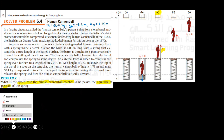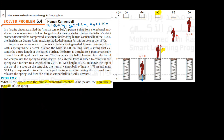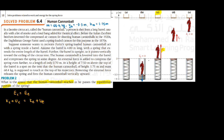We are going to use the law of conservation of energy again. This time I am going to choose points C and E, because C is the point where I want to find my velocity. So we write total energy at C equals total energy at E. At point C, my human is at the reference point — zero height — and the spring is at equilibrium position. So potential energy at point C will be zero.